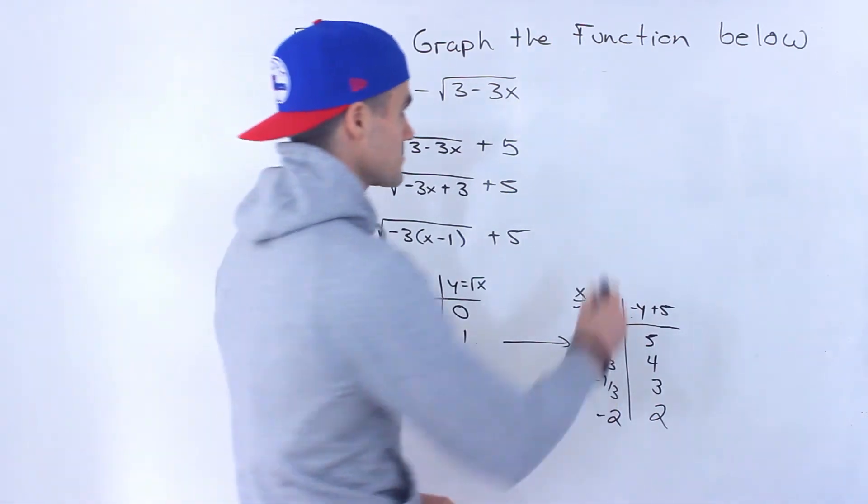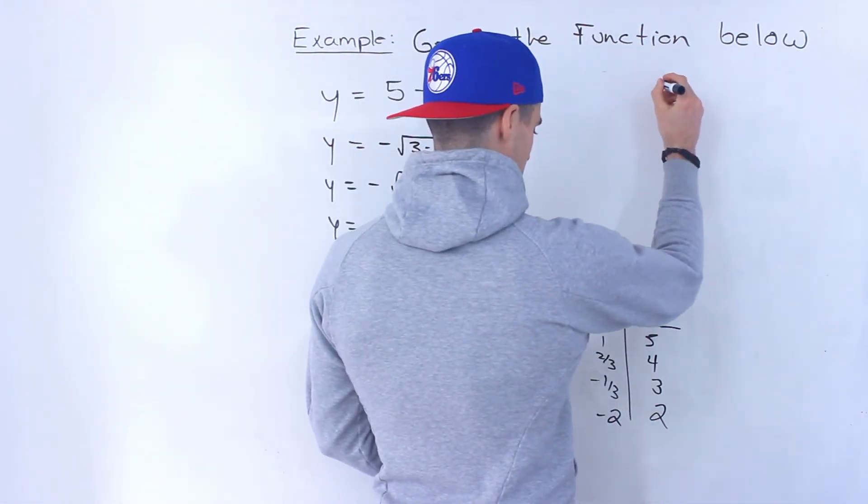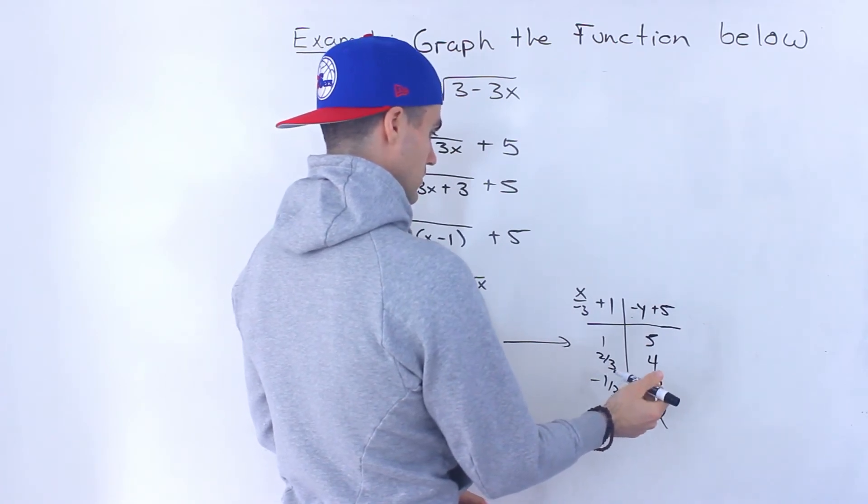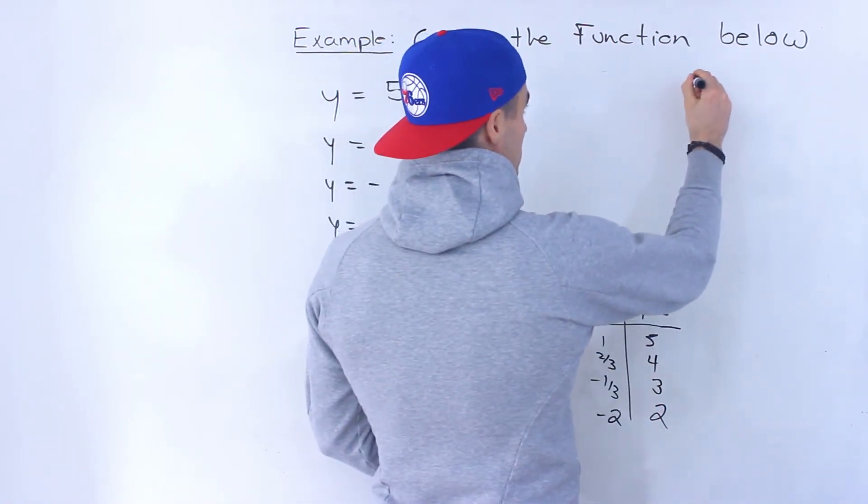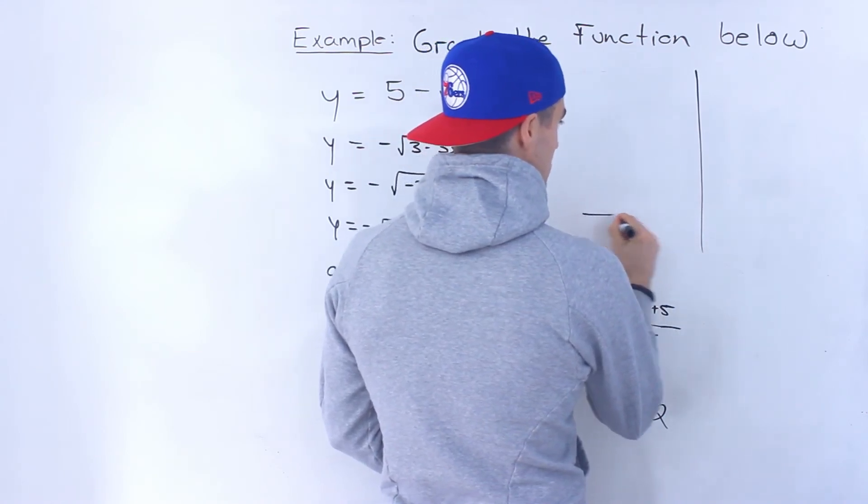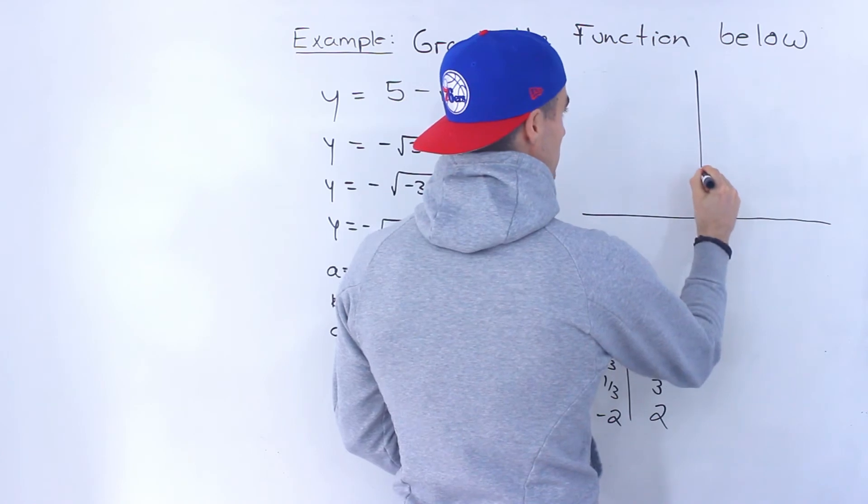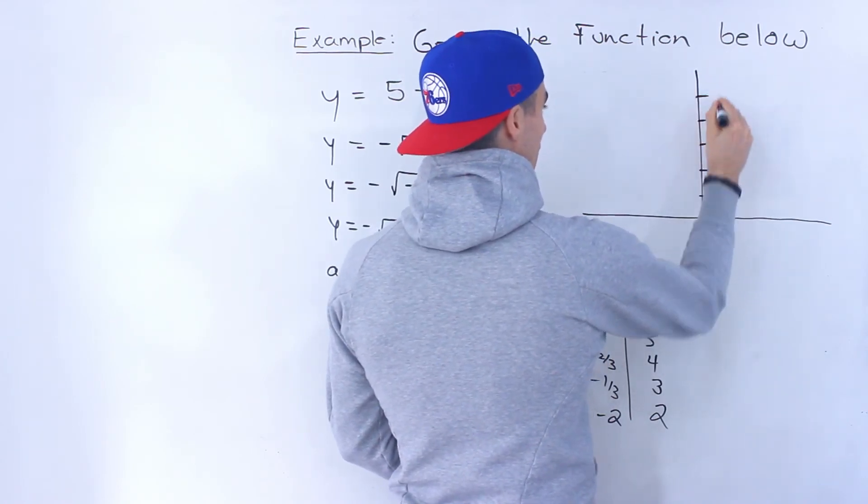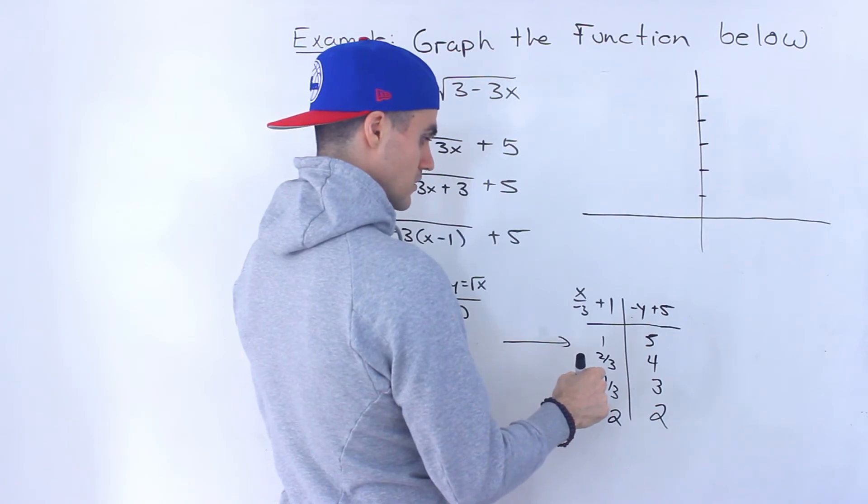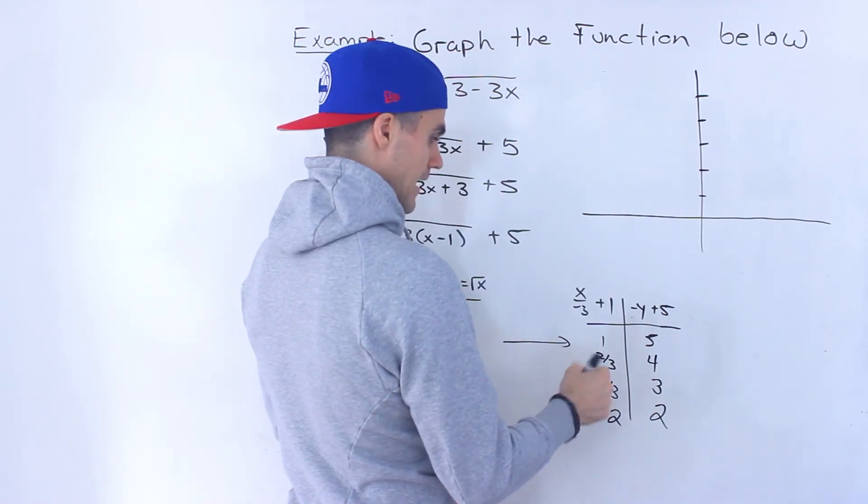So if we take these points, let's try to keep it as to scale as possible. All the y values are positive, so let's do that. We'll have 1, 2, 3, 4, 5. And then the x values, let's go up by halves.